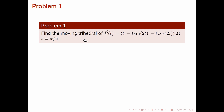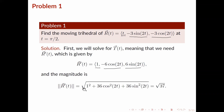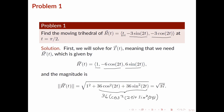We start by solving for the unit tangent vector. First let's calculate the derivative of r by differentiating each component. After that we need to find the magnitude of this vector. To simplify, we can factor out 36 from these two terms, so we get cosine squared of 2t plus sine squared of 2t. By the Pythagorean identity, cosine squared plus sine squared equals 1, so this simplifies to 36, and substituting back in and simplifying we get the square root of 37.